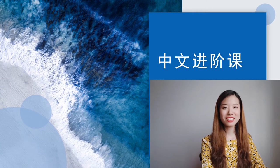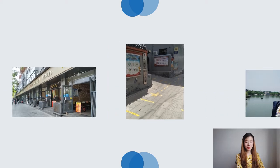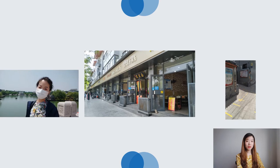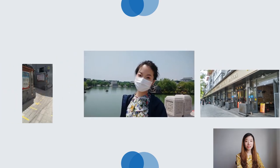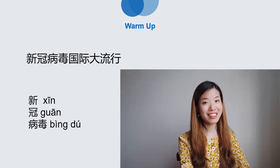Now let's start with the class. First, let's see some pictures. The first picture is outside a school — people are trying to keep distance by the mark on the ground. The second picture shows some stores already opened. And the third picture is me wearing the mask. 戴着口罩. So you probably guess what we're going to talk about today.